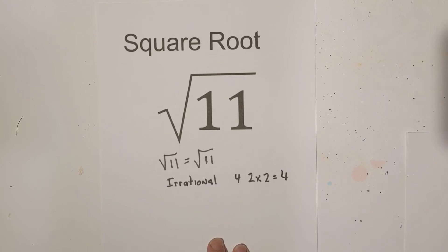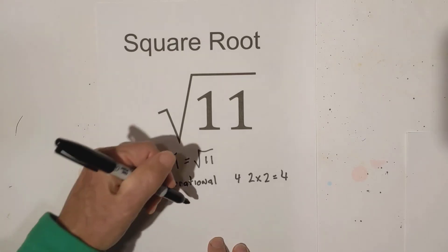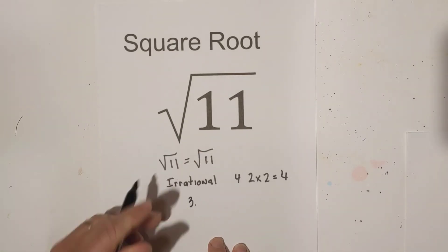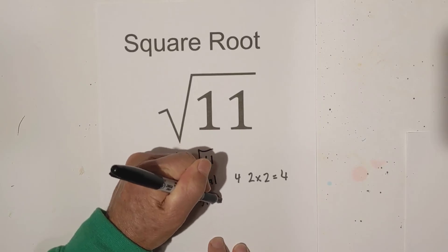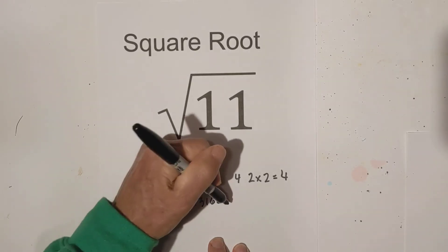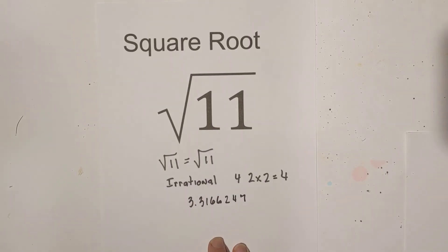If you would like the square root of 11 as a decimal form, it is 3.3166247. It would continue since it's an irrational number.